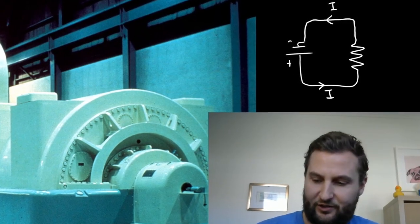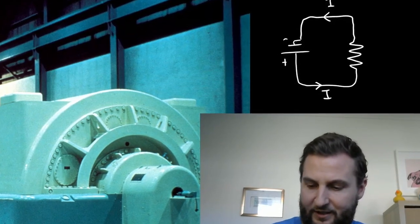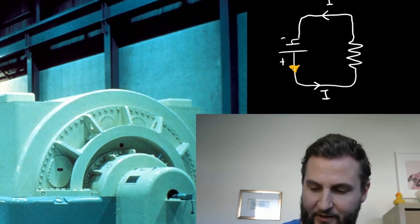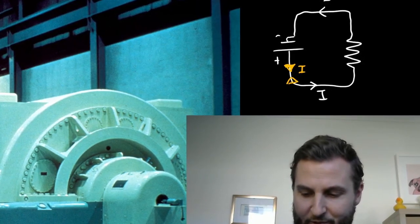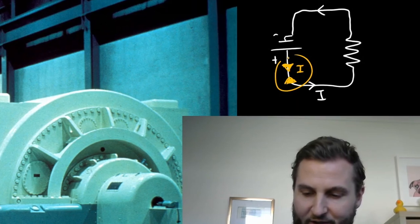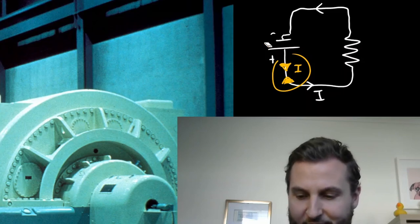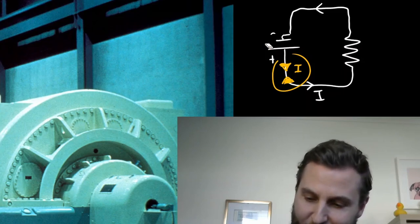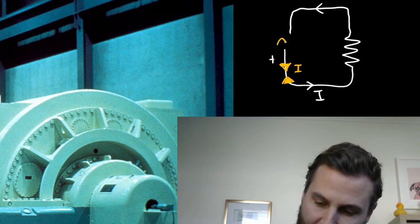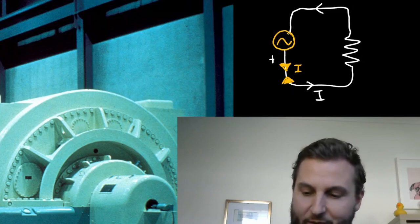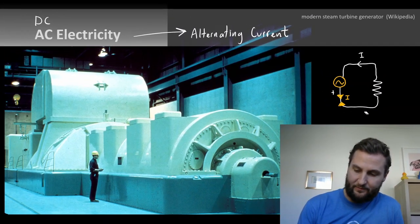For an AC circuit it looks a little bit different — we have some current going one way, but then the current alternates and moves in the other direction. The symbol specifically reserved for DC is replaced here; for an alternating source we draw a little sine wave or cosine wave — a trig function — and pop it into our circuit like that.